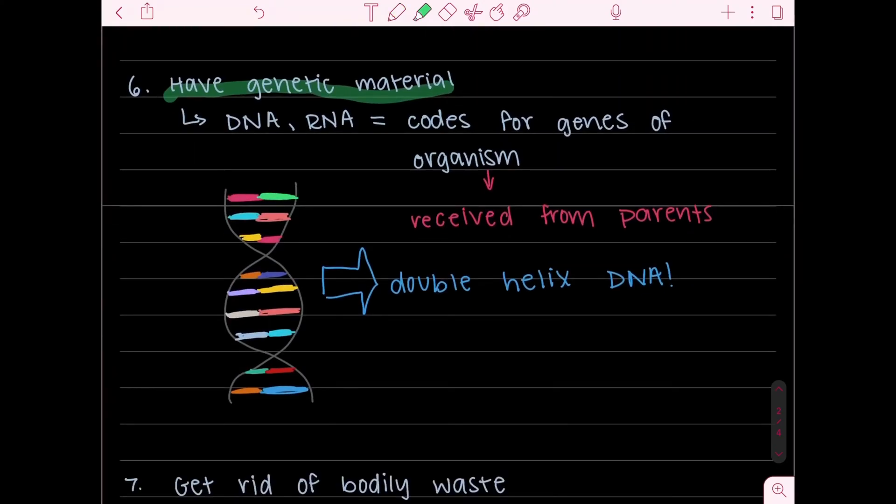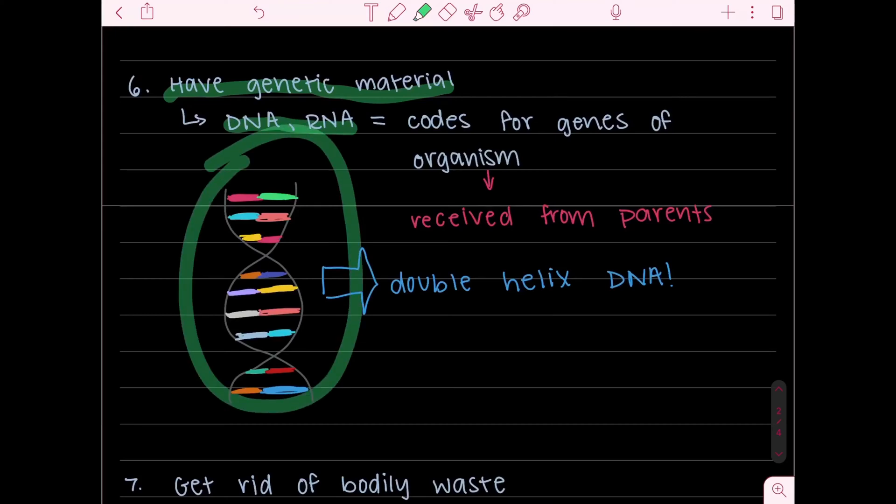Okay so genetic material consists of DNA or RNA which codes for the genes of an organism and these genes are received from the parents or if it's asexual reproduction then the organism will only have one parent but still the genes will still be received from the parent or parents. The drawing that I gave here is the double helix pattern for DNA and yeah so I just thought that drawing would help so that you could recognize it a little bit.